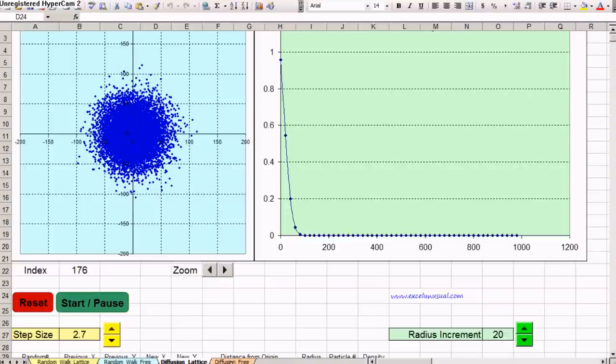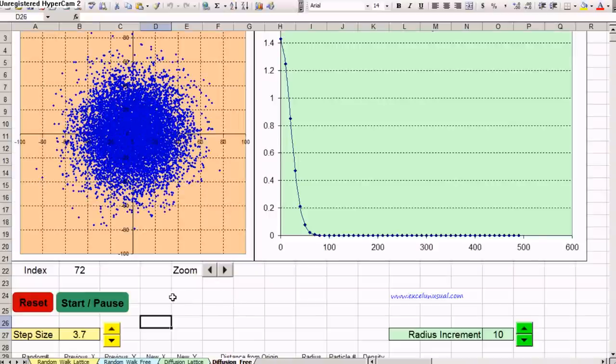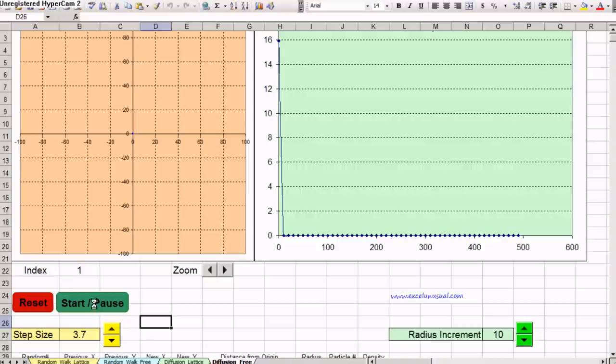The last worksheet contains another diffusion but a free diffusion in the sense that just like in the second model, the free random walk, any of these 10,000 molecules or particles will be able to move with one fixed step size. We can adjust it, but in any direction with equal probability between 0 to 360 degrees. Let's reset this and start it.